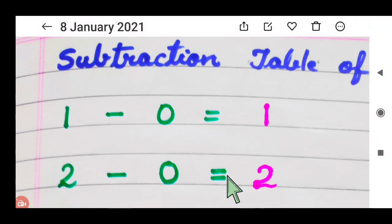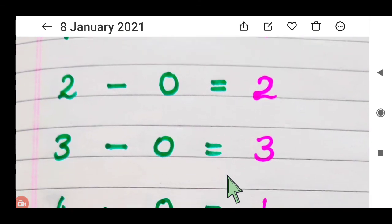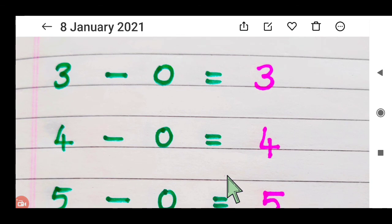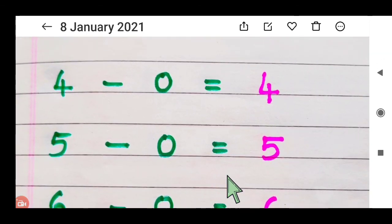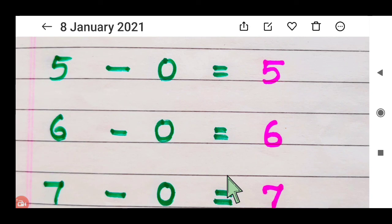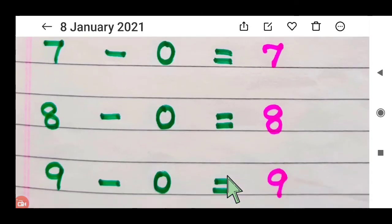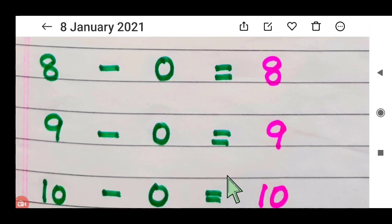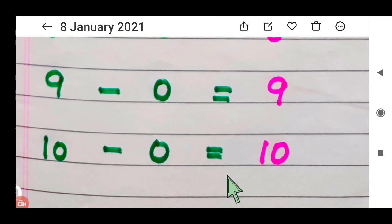1 minus 0, 1. 2 minus 0, 2. 3 minus 0, 3. 4 minus 0, 4. 5 minus 0, 5. 6 minus 0, 6. 7 minus 0, 7. 8 minus 0, 8. 9 minus 0, 9. 10 minus 0, 10.